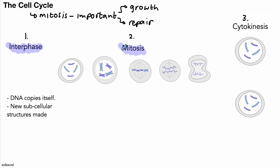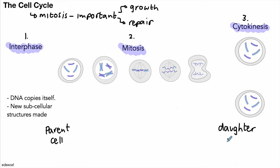The next stage is mitosis, and we'll look at that in detail in a moment. Then we have the third stage, which is cytokinesis. Overall, what we have is a parent cell to begin with, and this then splits into two daughter cells. These daughter cells are identical to the parent cell.